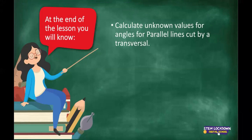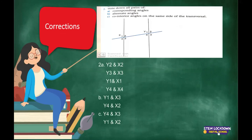So for today's lesson objectives, at the end of the lesson, the learner must be able to calculate unknown values for angles for parallel lines cut by transversals. That's our only objective for the day, because we'll be doing a lot of explaining and a lot of demonstration.